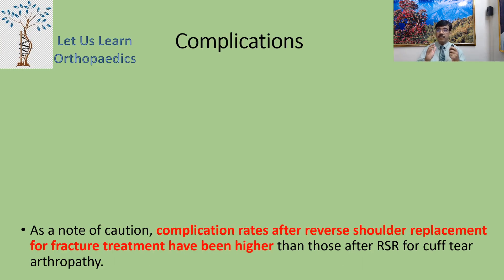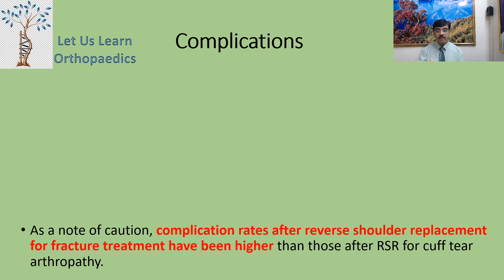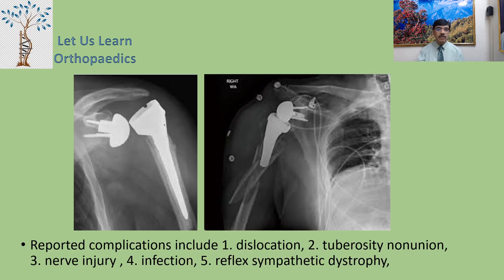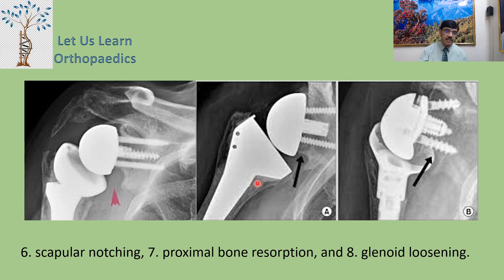As a note of caution regarding complications: complication rates after reverse shoulder replacement for fracture treatment have been higher than those after RSA for cuff tear arthropathy. Reported complications include dislocation, tuberosity non-union, nerve injuries, infection, reflex sympathetic dystrophy, scapular notching, proximal bone resorption, and glenoid loosening. Scapular notching — as seen in the x-rays — is one of the most important complications.